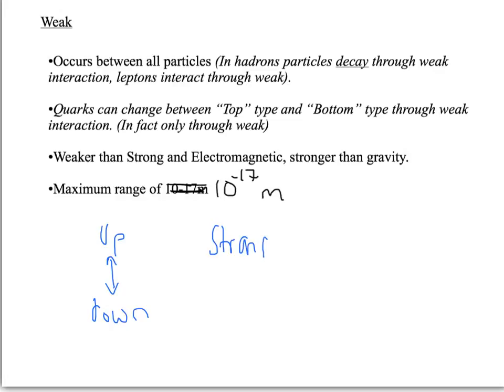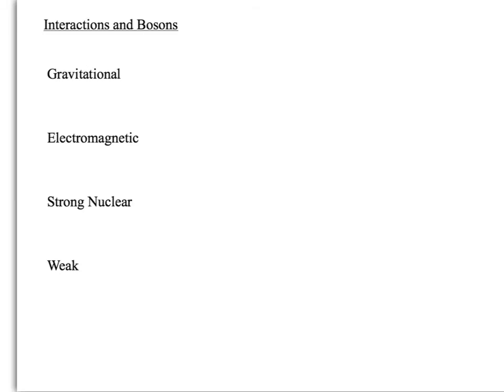Strange and charm are interchangeable, and top and bottom are interchangeable through the weak interaction. Those are the possible changes that you can make in an interaction situation. Linking back to the stuff I've done on bosons, when we talk about these types of interaction, we say there's a particle being exchanged when two objects interact. To demonstrate this, we have what's called an exchange particle, and that will be a type of boson.